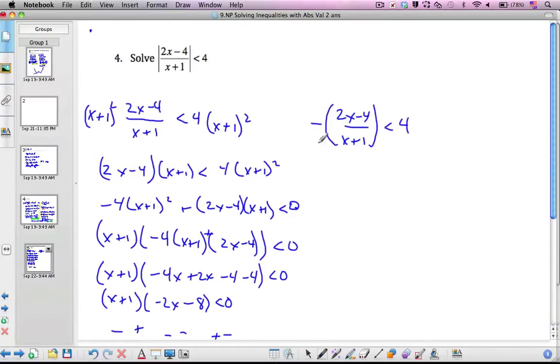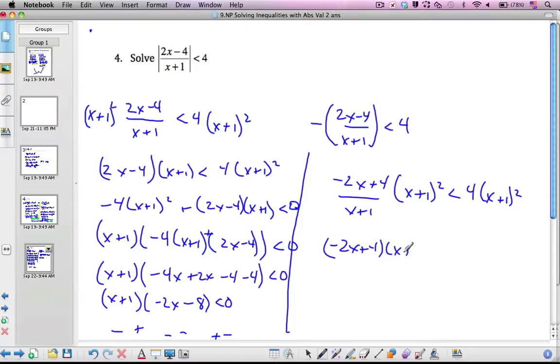Let's now take a look at the other side to consider. I'm going to multiply in my negative signs. We've got negative 2x plus 4 over x plus 1. And I'm going to multiply again by my denominator squared over x plus 1 squared. Simplify, cancel, I get negative 2x plus 4 times x plus 1. I'm going to bring this all over at once. So negative 4x plus 1 squared less than 0.